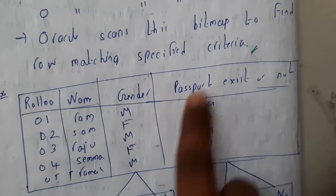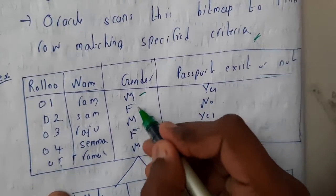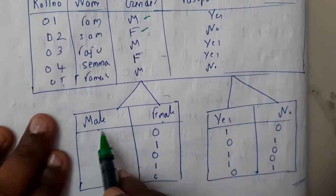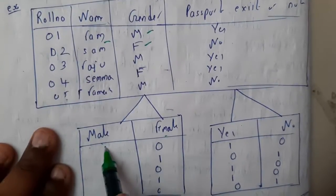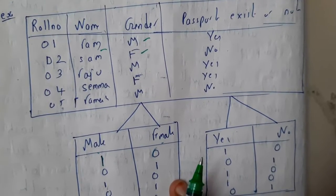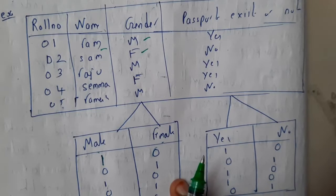Here we are having roll number, name, gender, passport. Here gender we are having two options: male and female. If you are male, Ram is male, so that's the reason why it gave one. He is not female, so that's the reason why it gave zero.